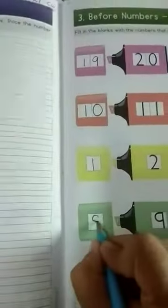Next is 9. 9 ke pehle kya aata hai? 8. Write down here. 8.